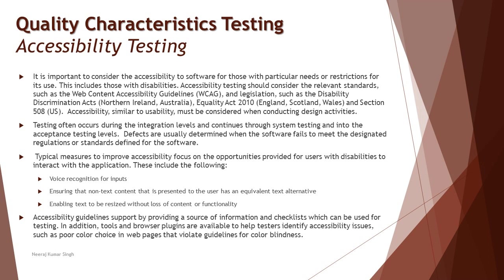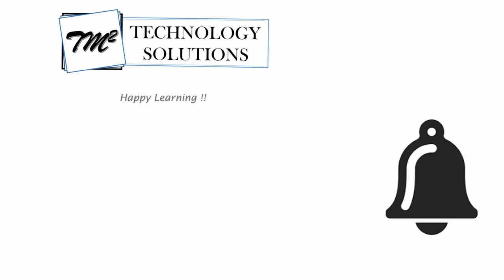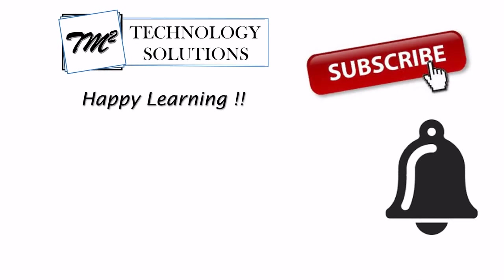Tools and browser plugins are available to help test or identify accessibility issues, such as poor color choices in web pages that violate guidelines for color blindness. Several browser extensions available in your day-to-day work can help you build a better accessible product. There are specialized accessibility testers who handle these areas professionally. That's all for this tutorial — feel free to comment below with any queries. Keep learning, keep exploring, keep understanding the context. Thanks for watching and happy learning!